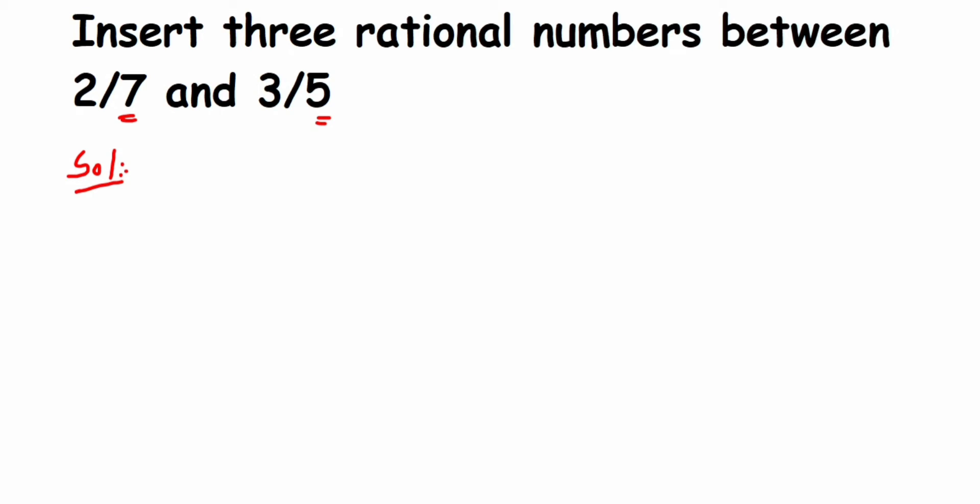What we're going to do is take the LCM of 7 and 5 so that we can find the equivalent rational numbers. Let me first find the LCM. LCM of 7 and 5 is 35.